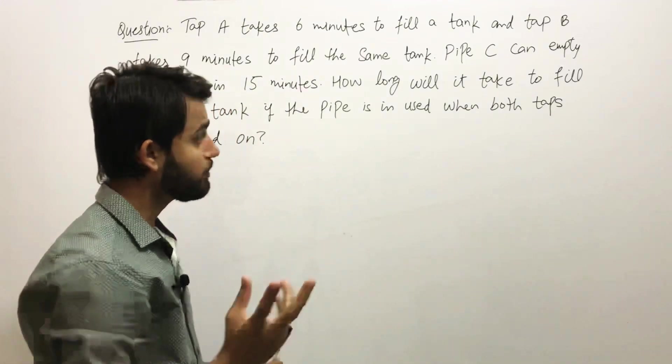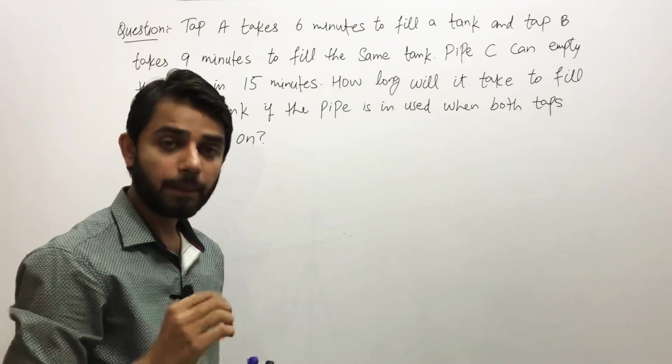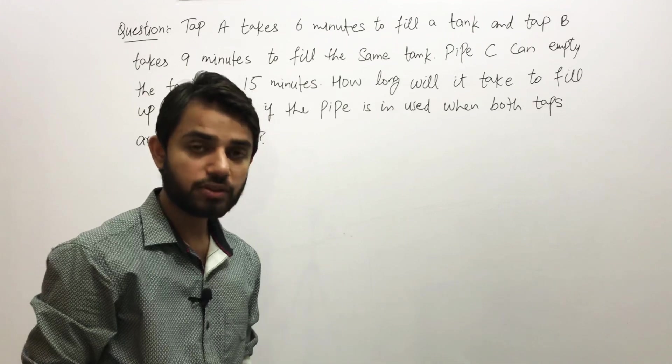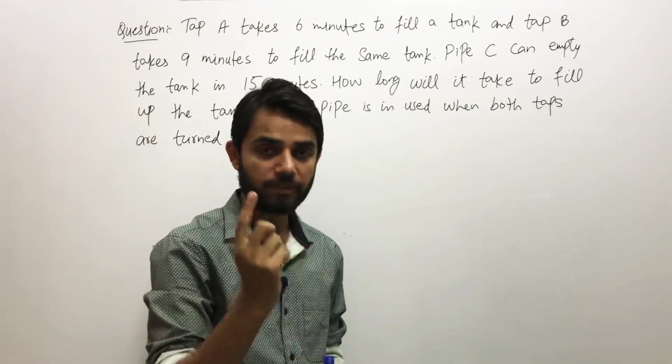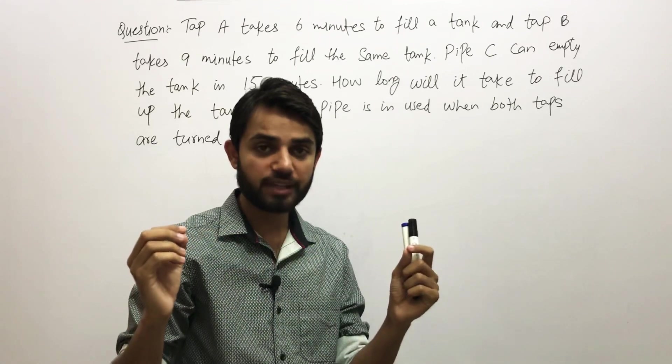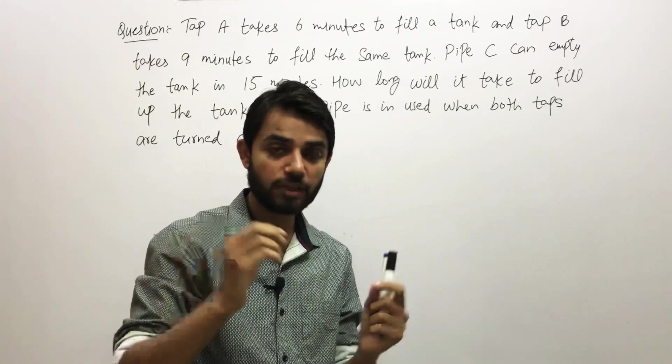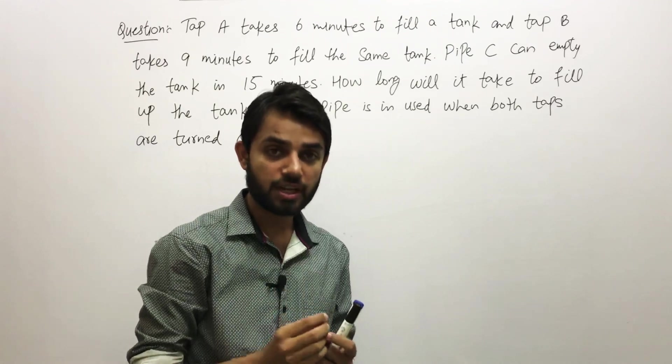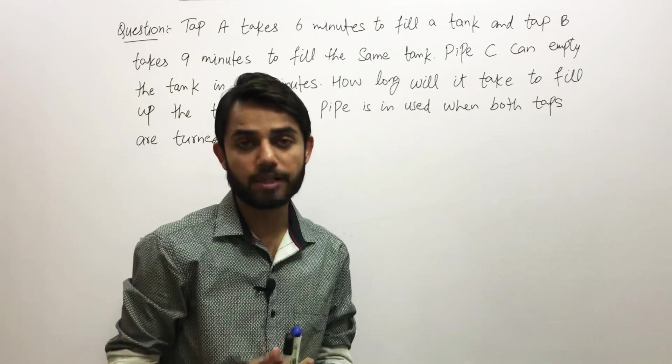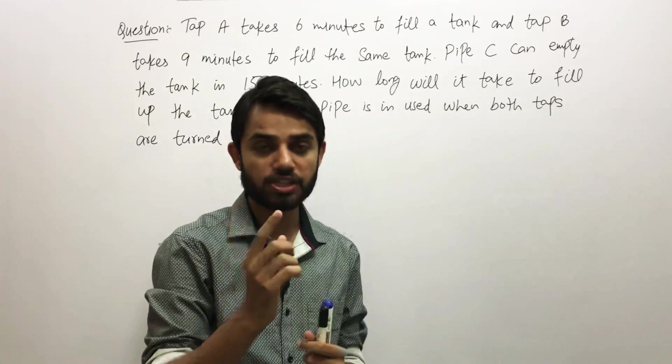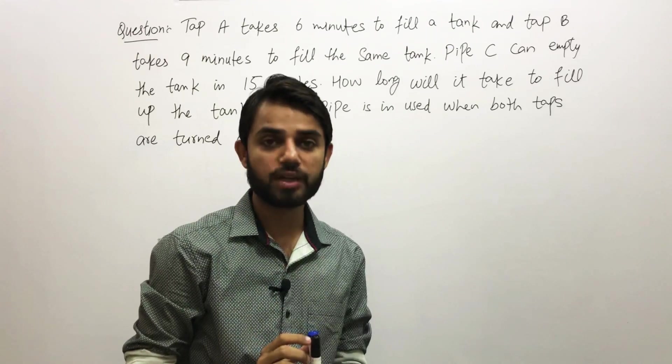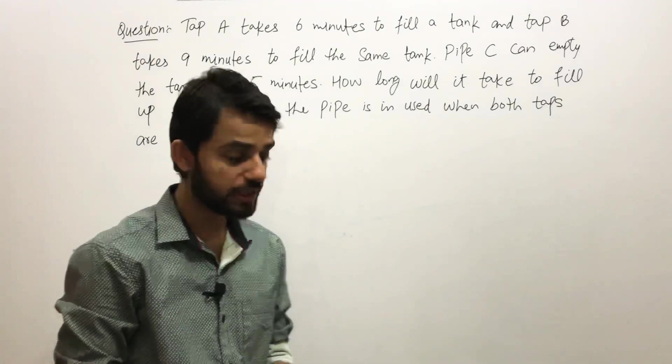First of all, we need to understand why for Tap A it takes 6 minutes and why for Tap B it takes 9 minutes. The taps are always in the shape of a circle. Tap A might have a wider diameter, so that is why it takes less time for Tap A to fill up the whole tank, because the water coming from Tap A per minute is greater than for Tap B.